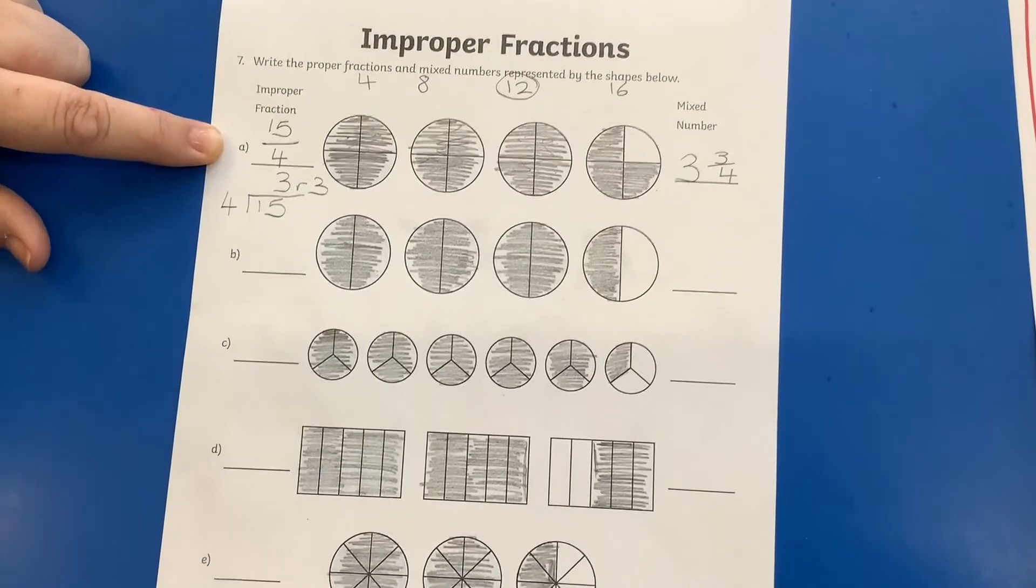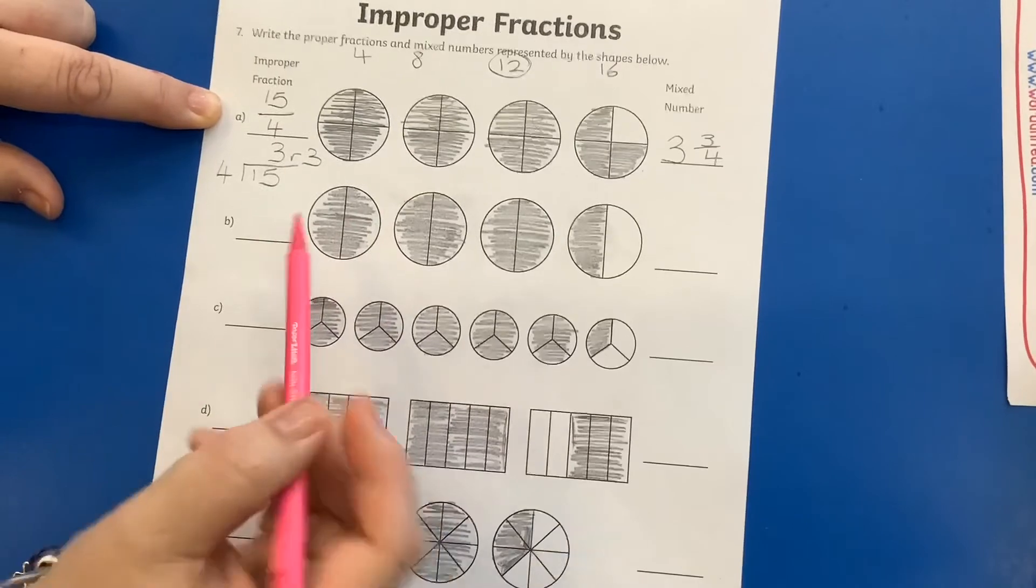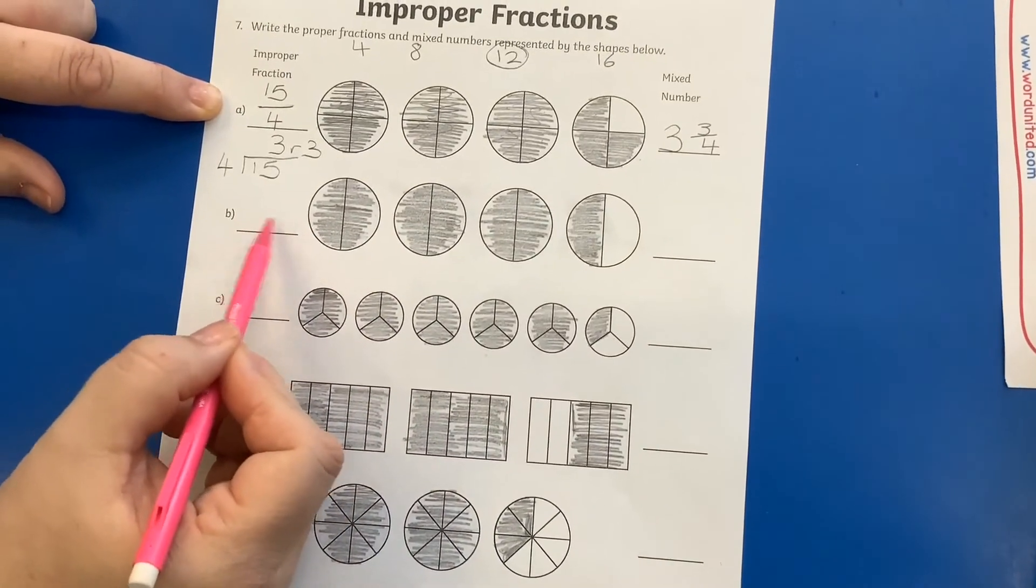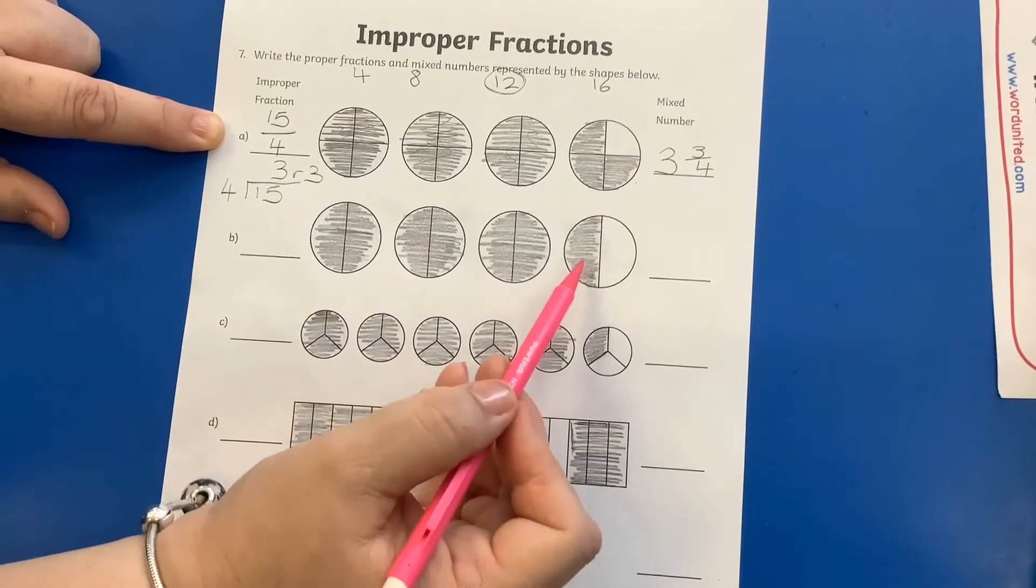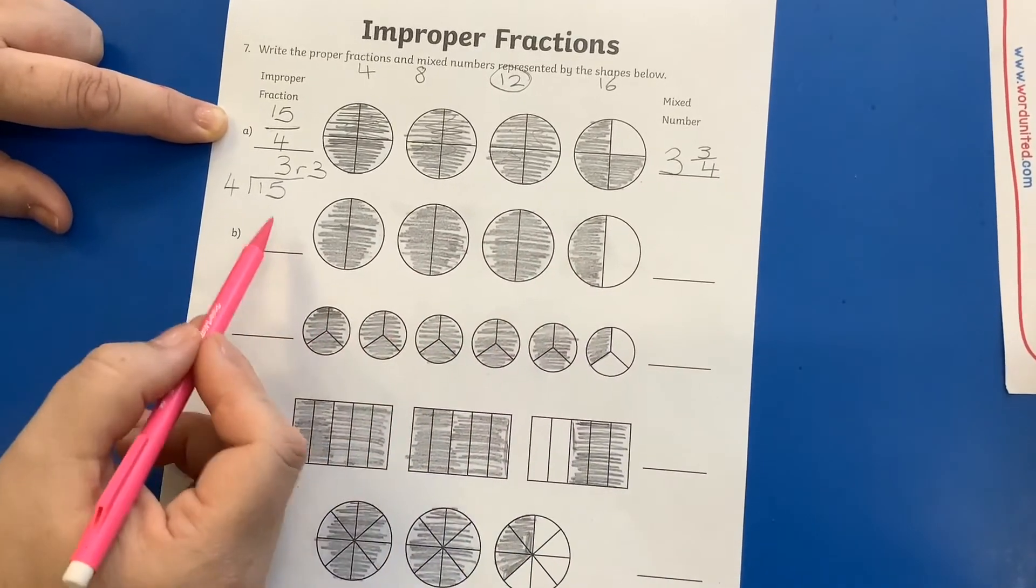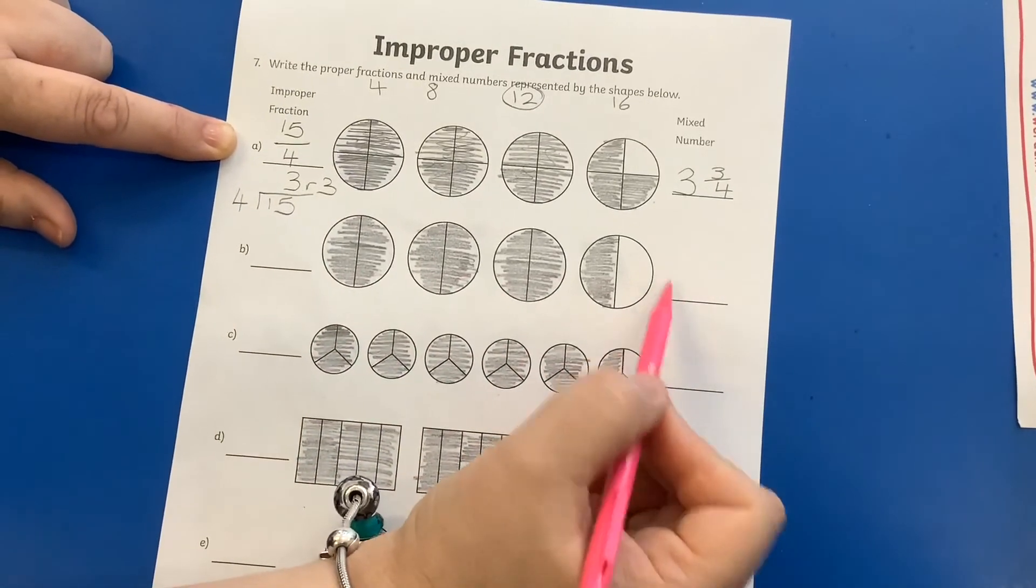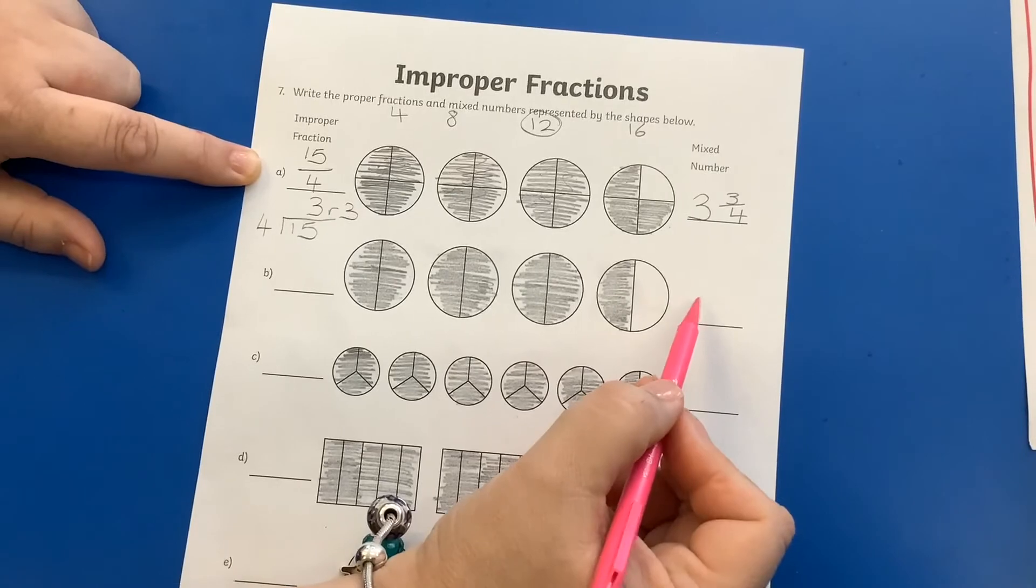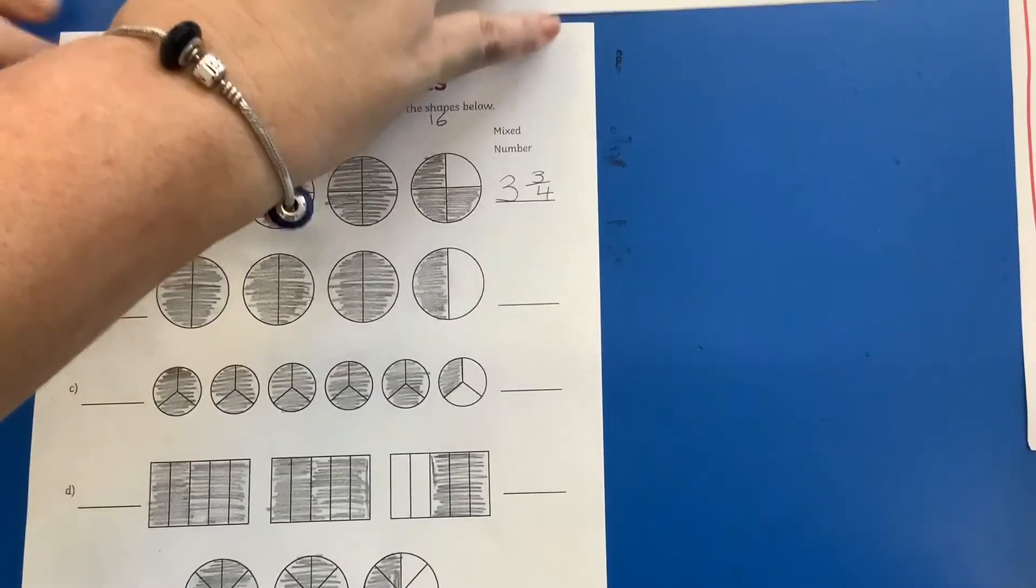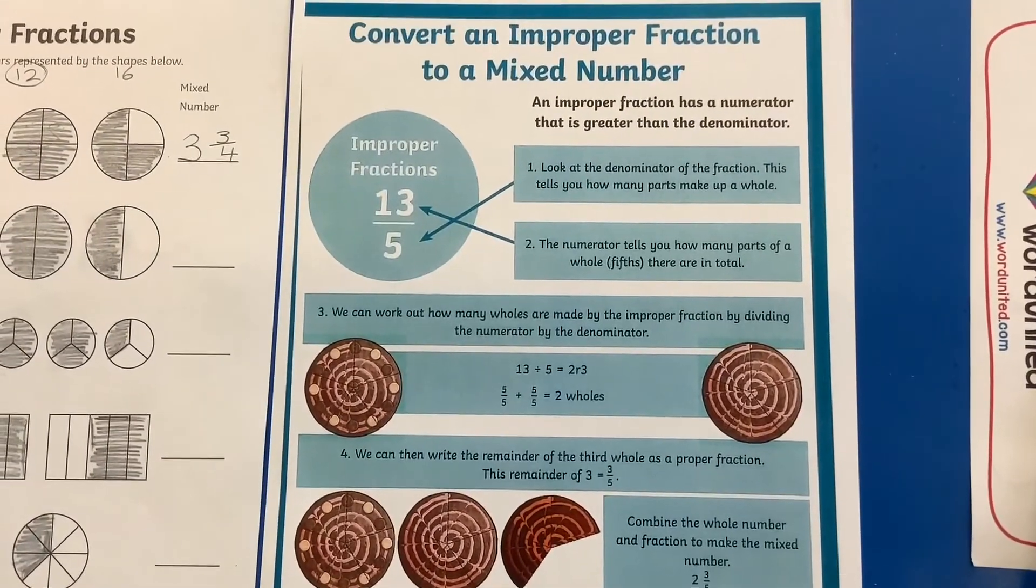So then I'm going to leave you to do the next few by yourself. So again, these are in halves, aren't they? So your number here, your denominator is going to be a two, because it's halves. How many halves have you got? So you write your improper fraction on this side, and then your mixed numbers here. And remember, mixed numbers are a whole number with a fraction. And then remember also, in your pack, you've got this sheet to help you.